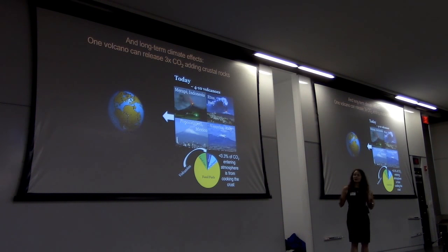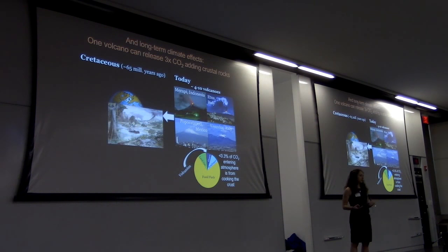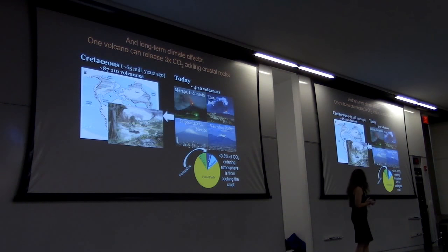But if we look back in time, we know that plate tectonics has shifted the Earth's continents around, for example, the breakup of Pangaea. And this means that the number and location of volcanoes has changed over time and throughout Earth's history.